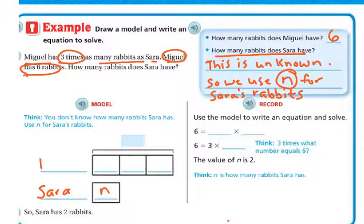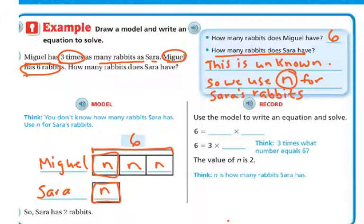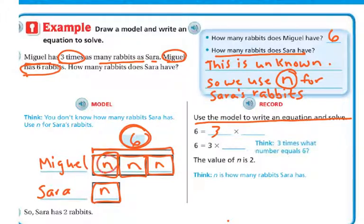But we know that Miguel has 6 rabbits total. And we know that he has 3 times as many as hers. If she has N, then that means she's going to have 3 Ns. And we do know that he has 6. So let's use the model to write an equation and solve. So we know Miguel's 6 is going to be 3, 3 of these. And we know that she's an N, so it's going to be 3 times N.